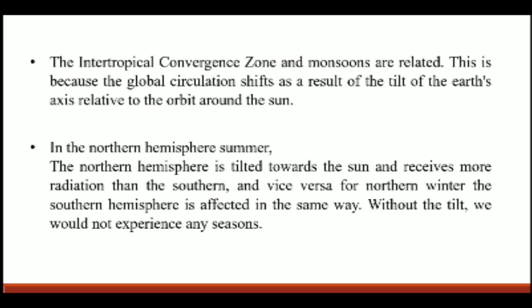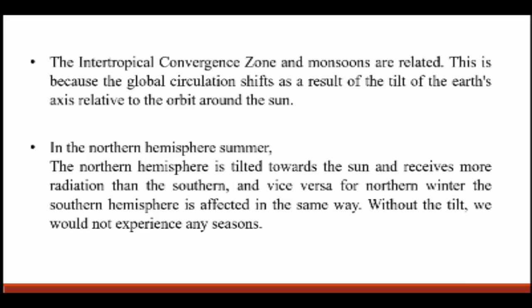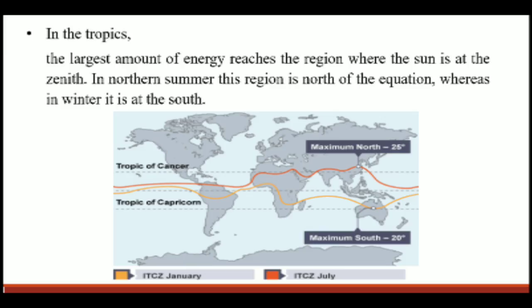The Intertropical Convergence Zone and monsoons are related. This is because the global circulation shifts as a result of the tilt of the Earth relative to its orbit around the Sun. In Northern Hemisphere summer, the Northern Hemisphere is tilted toward the Sun and receives more radiation than the Southern Hemisphere, and vice versa for Northern Winter. Without the tilt, we would not experience any seasons. The largest amount of energy reaches the region where the Sun is at the zenith.